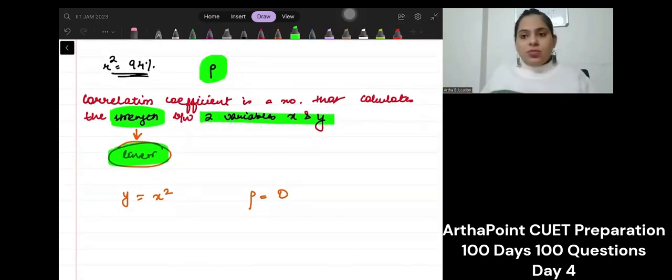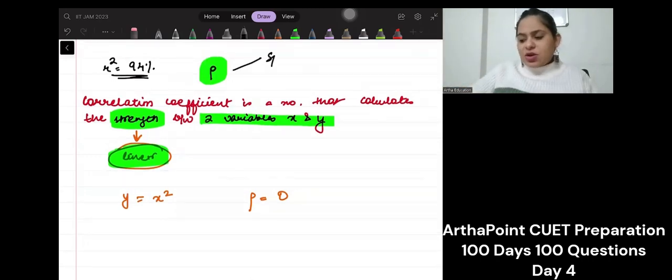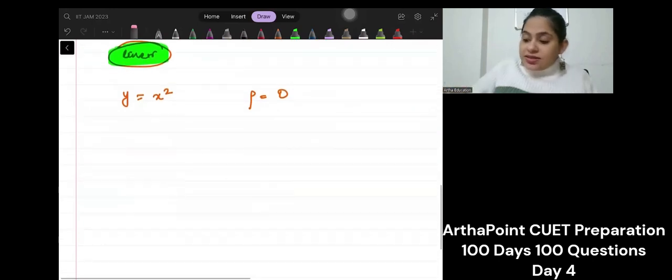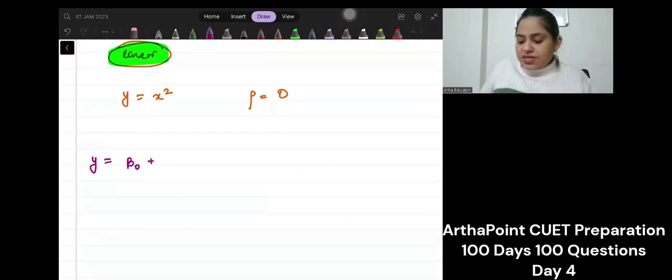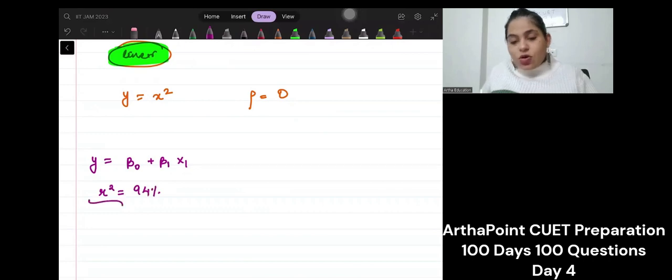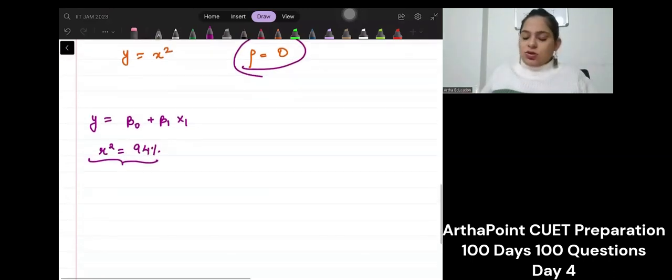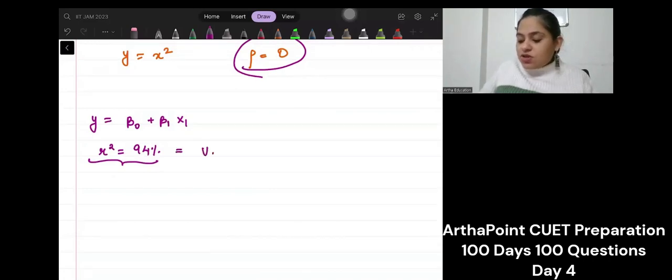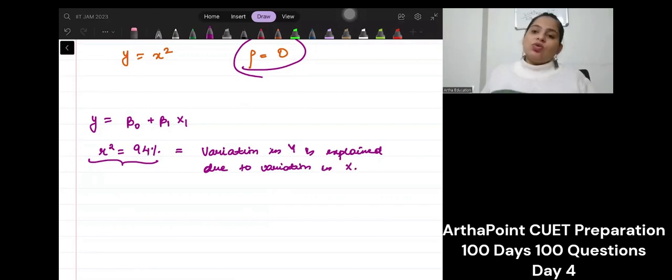Usually it is represented by rho. To measure this, there are various methods - Spearman's method, rank correlation method, etc. But when we talk about regression, then this r square definition changes a bit. So if I say y equals beta naught plus beta 1 x1 and I say r square is 94%, then this r square tells me how much variation in y is explained due to variation in x.